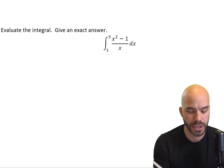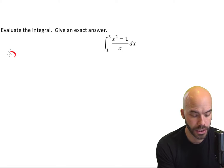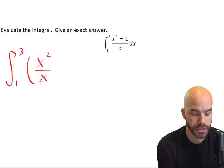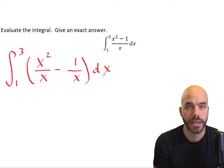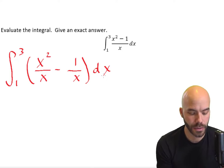In other words, x squared minus 1 over x, let's break that up into x squared over x minus 1 over x dx. That way we can reduce the x squared over x.